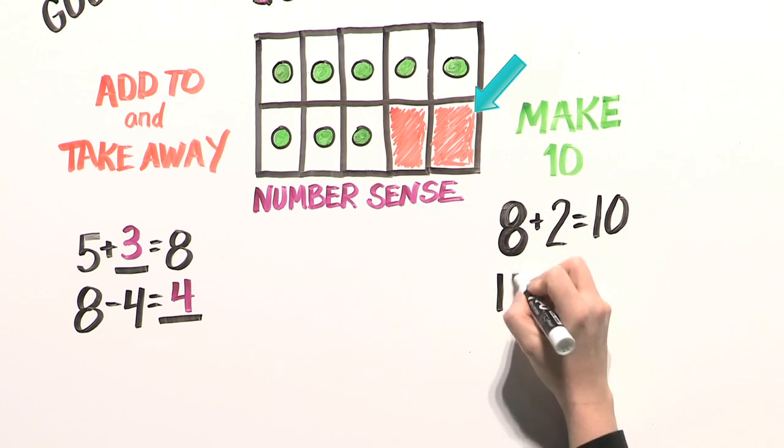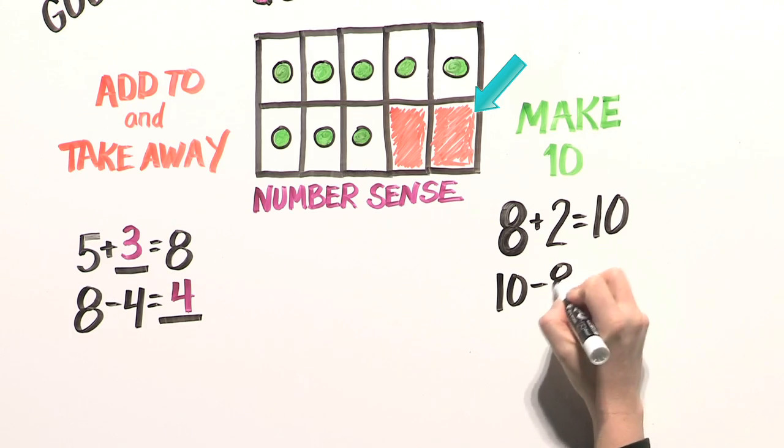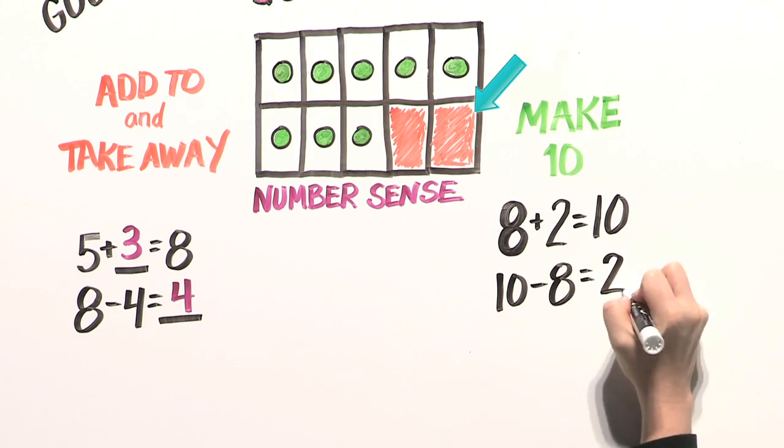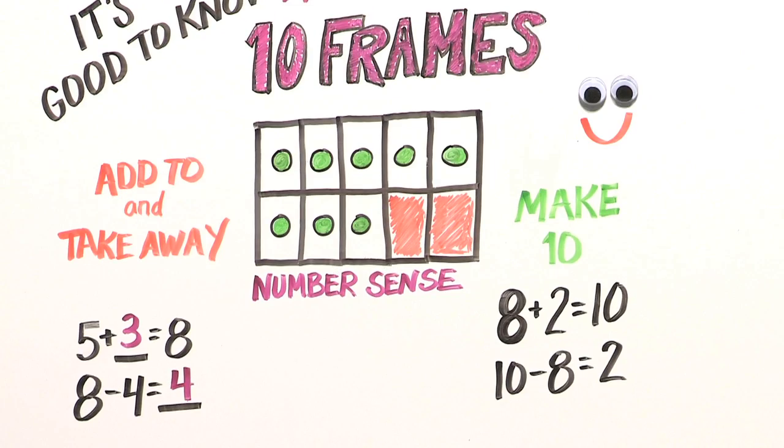The 10-frame card shows that 8's missing number partner is 2. Your child can see that 8 plus 2 equals 10, or 10 minus 8 equals 2.